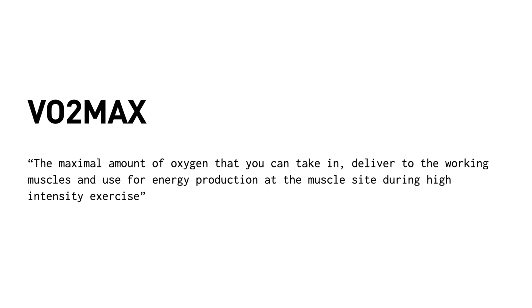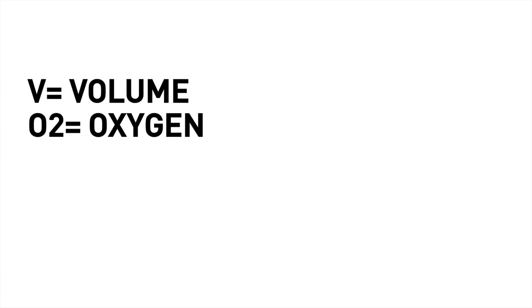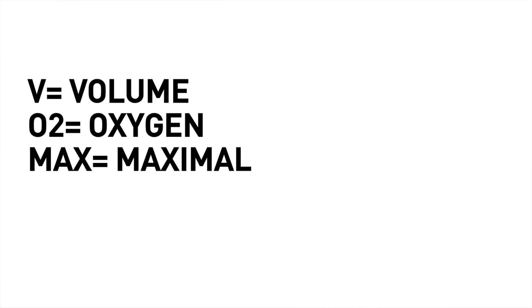To start with, the VO2 max — as many of you probably already know — is the maximal amount of oxygen that you can take in, deliver to the working muscles, and then use for energy production during high intensity exercise. Breaking this down, the V stands for volume, the O2 for oxygen, and the max part for, you guessed it, maximal.